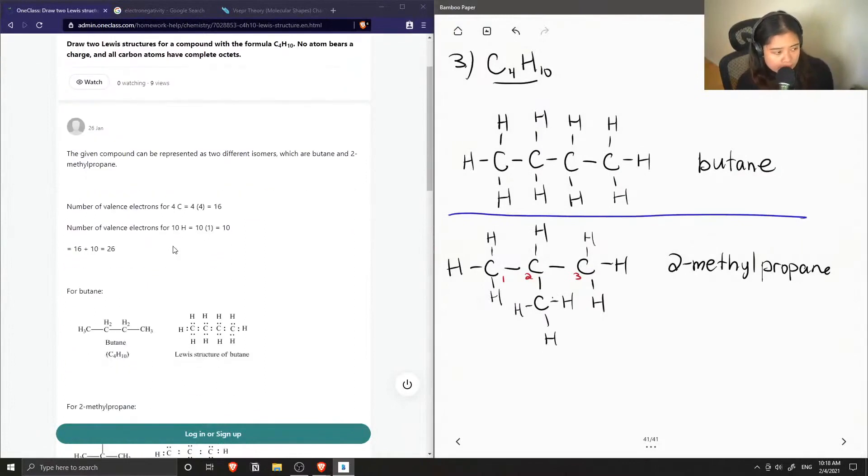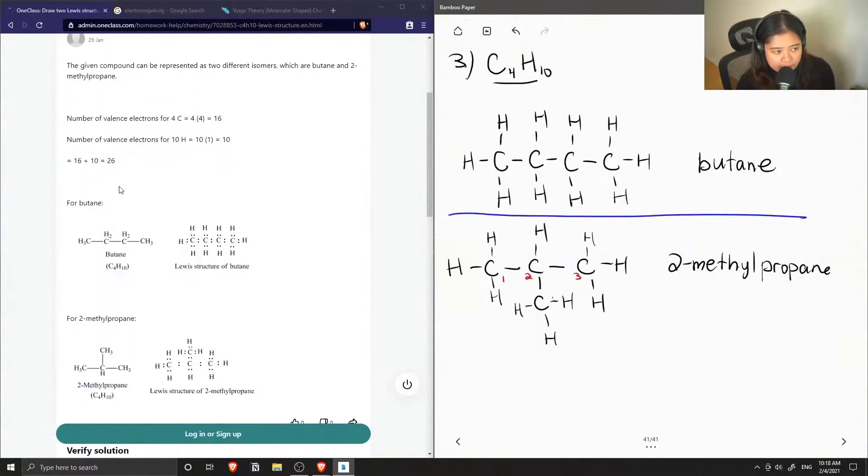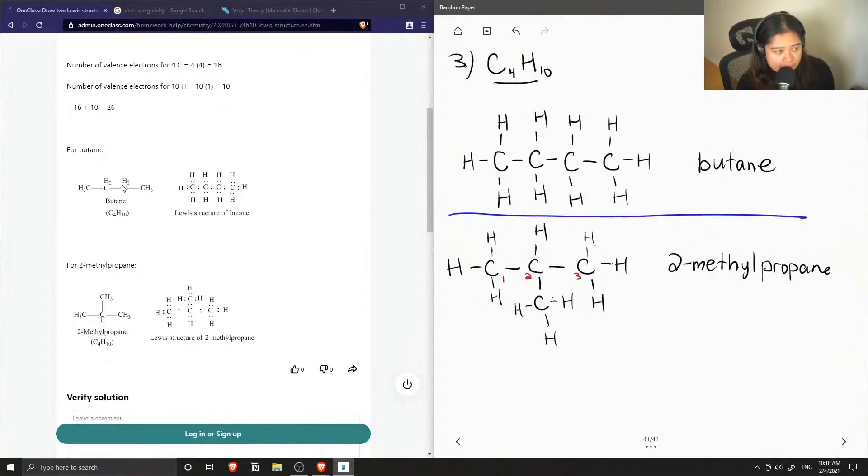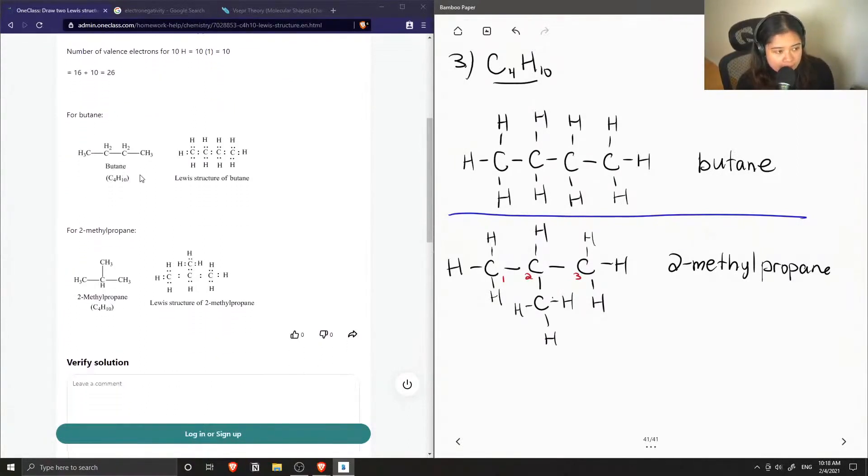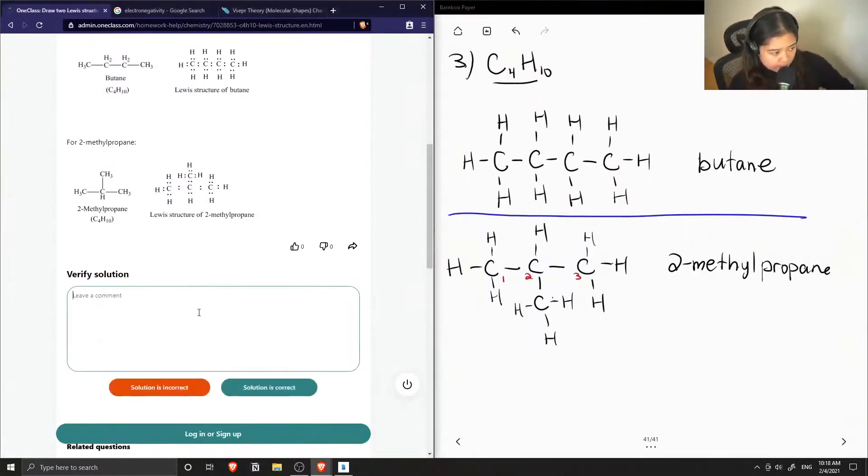The junior tutor said that the given compound can be represented as two different isomers, which are butane and 2-methyl propane. They calculated the number of valence electrons for both and got 26. This solution is correct. Perfect.